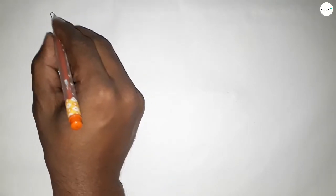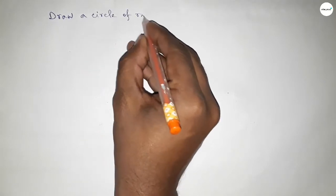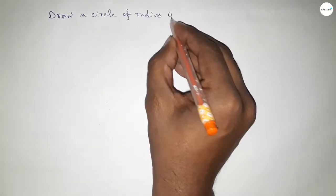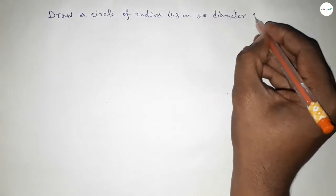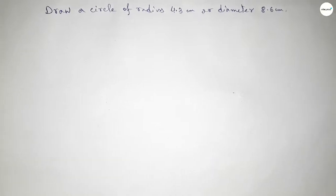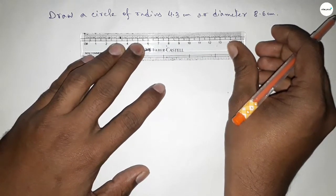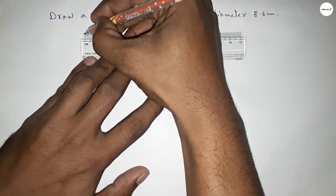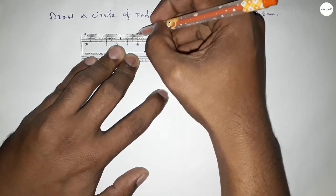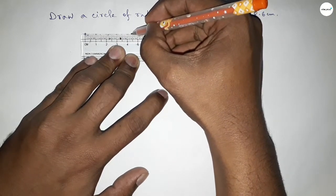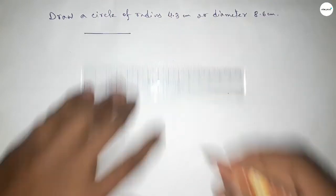Hi everyone, welcome to SI Share Classes. Today in this video we have to draw a circle of radius 4.3 centimeters or diameter 8.6 centimeters. So let's start the video. First of all, drawing the radius 4.3 centimeters. The radius of a circle is half of the diameter, so this is 4.3 centimeters. First, drawing here the radius.